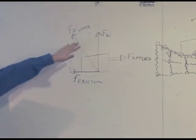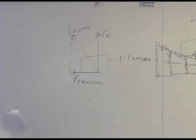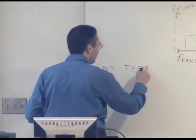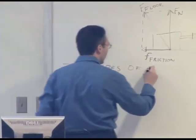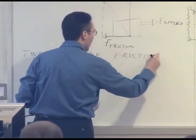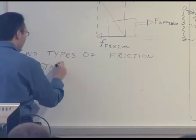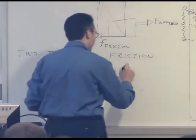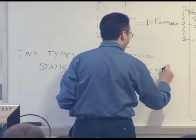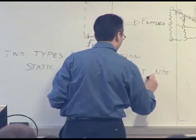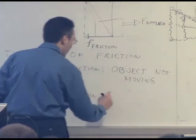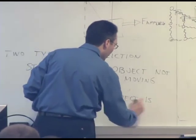The way we can, there's two, let's put it this way. Two types of friction, roughly speaking. We have static friction, which is when the object is stationary, object not moving. We have kinetic friction. So the object is moving, it's sliding along the surface.